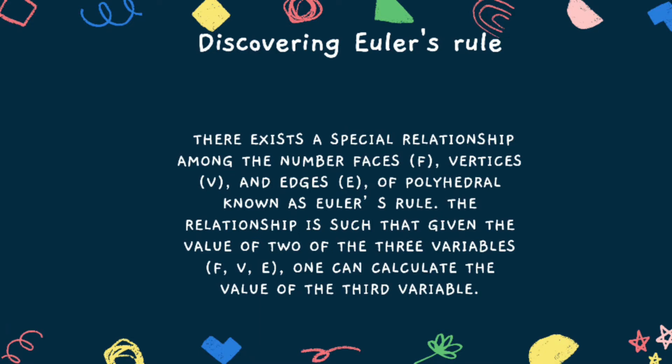Discovering Euler's rule. There is an existing special relationship among the number of faces, vertices and edges of polyhedra known as Euler's rule. The relationship is such that given the value of two of the three variables F, V and E, one can calculate the value of the third variable. This ends our topic about learning Euclidean geometry.